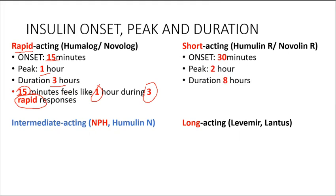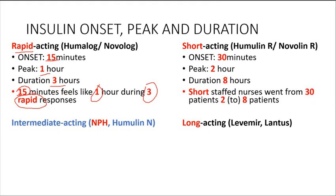For short acting insulin, the onset is 30 minutes, the peak is 2 hours, and the duration is 8 hours. To remember that, use the phrase: 'Short-staffed nurses went from 30 patients to 8 patients.' Short tells you it's short acting; 30 is onset, 2 hours is peak, and 8 hours is duration.